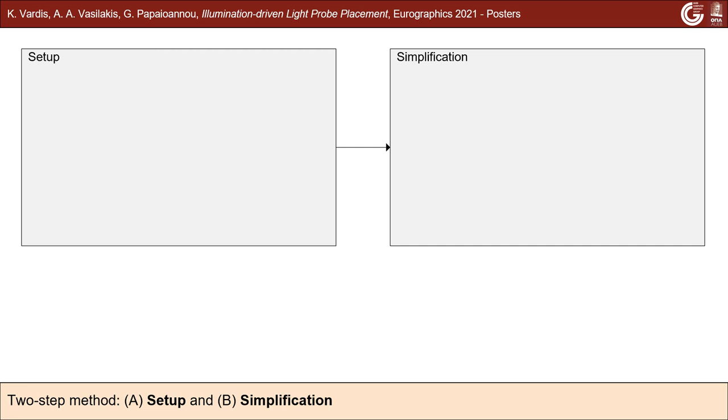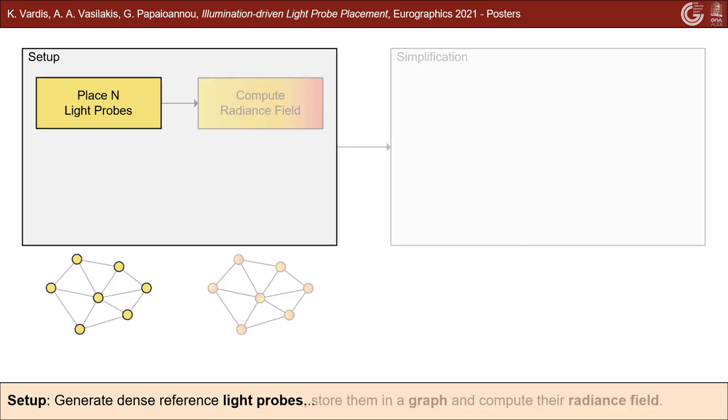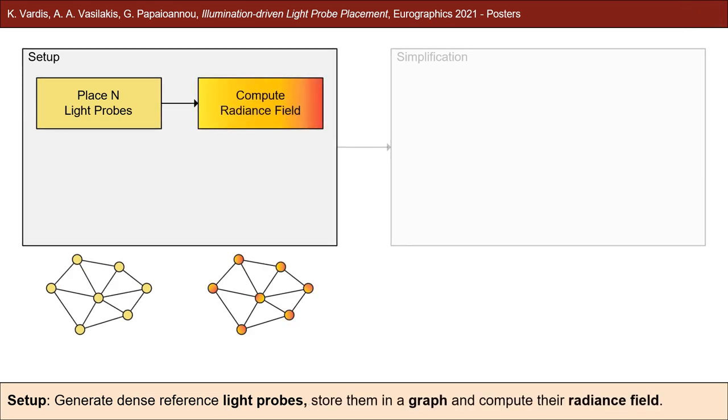Our method operates in two stages: setup and simplification. First, a large number of probes is placed in the scene according to a user-selected space-filling strategy. Then, the probes are spatially connected to form a graph and their radiance field is computed.